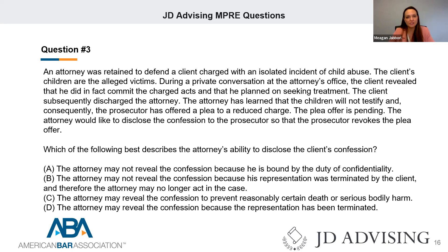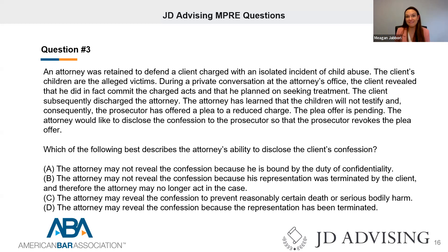Stopping there — this question is testing the duty of confidentiality, which makes up 6 to 12% of your total exam. The rule says a lawyer is prohibited from revealing information relating to the representation of a client unless an exception applies. There are seven exceptions, and you should memorize them because these questions love to test exceptions. Exception one: a lawyer may reveal information to prevent reasonably certain death or bodily harm. This looks tempting here, but the facts specifically use the words 'isolated incident,' so we have no facts supporting another dangerous situation — that exception is not applicable.